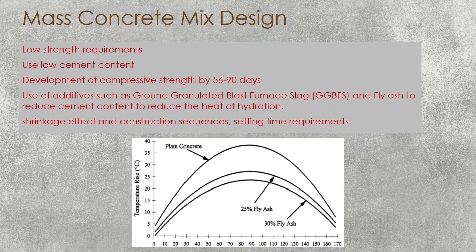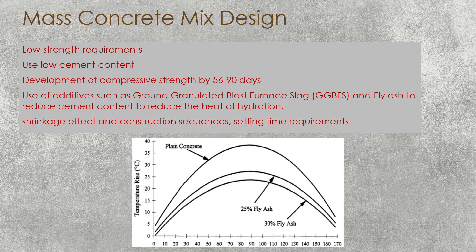Mass concrete mix design: we consider a low strength requirement, so low cement content is used. Development of compressive strength will be in the range of 50–60–90 days, because we don't want rapid strength gain. Construction of these structures takes time, so delayed strength achievement is not an issue. We use additives such as ground granulated blast-furnace slag (GGBS) and fly ash to reduce cement content and heat of hydration. Shrinkage effects, construction sequence, and setting time requirements also need to be considered in the mix design.